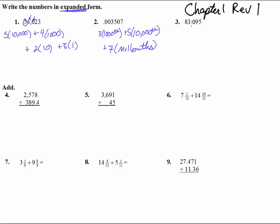Number three, 83.095. The 80, that's eight tens, plus three ones, plus no tenths, so plus nine hundredths. Make sure you get the th on there. Plus five thousandths. There we go.